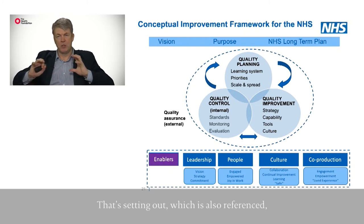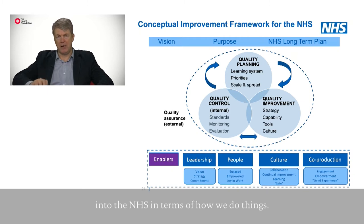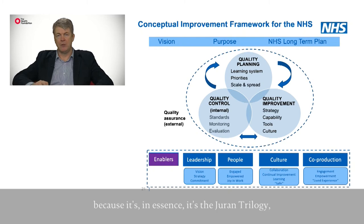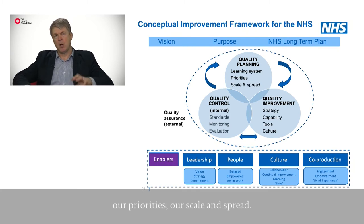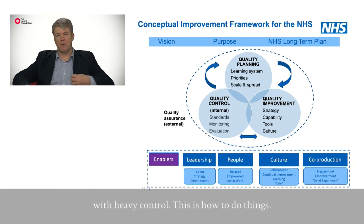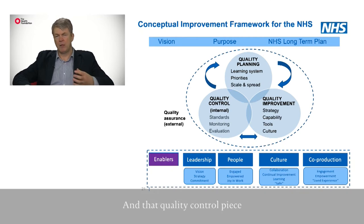The overarching piece is the vision and purpose, which I've already talked about. The NHS long-term plan has also referenced the importance of embedding improvement into the NHS in terms of how we do things. At the core, this will be familiar to many people — it's essentially the Juran trilogy: the quality planning piece, where we have our learning systems, priorities, and scale and spread; the quality control piece, which we've been heavily weighted towards — assuring, inspecting, ensuring the system is up to standard, internally focused — and which has been very well developed.